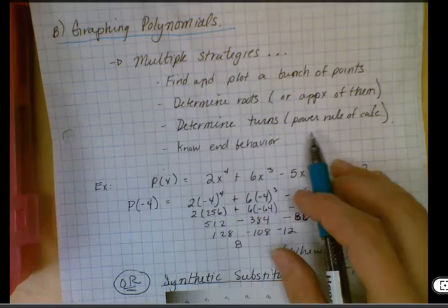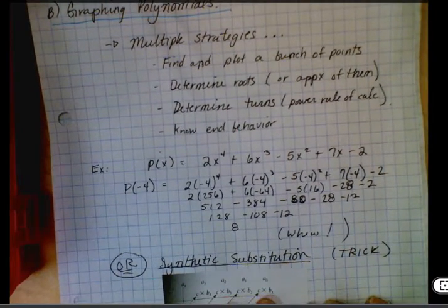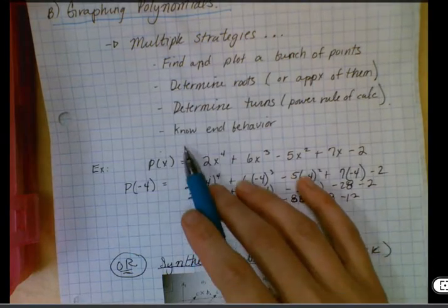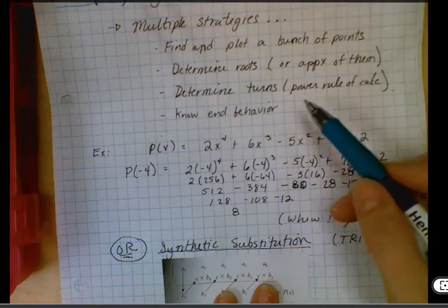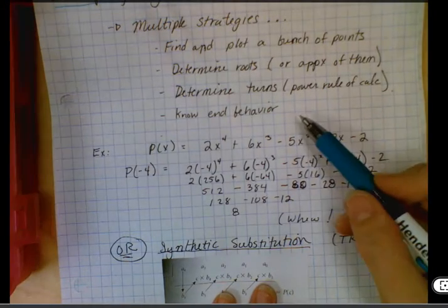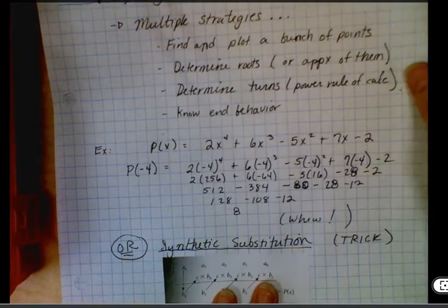So we took the derivative and we set it equal to zero. We can look at that a little bit more as we go on. And then we can use end behavior, which is what happens as x gets infinitely large. And as x gets infinitely small, what's the corresponding value of y.